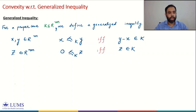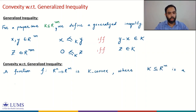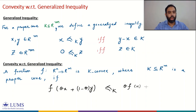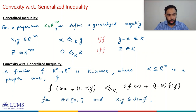Using generalized inequality we can also define convexity for vector-valued functions. For a function mapping from R^n to R^m, we say this function is K-convex if, for a proper cone K which is a subset of R^m, Jensen's inequality holds with respect to the generalized inequality: f(θx + (1−θ)y) ≤_K θf(x) + (1−θ)f(y), where θ is between 0 and 1 and x, y are two points in the domain of f.